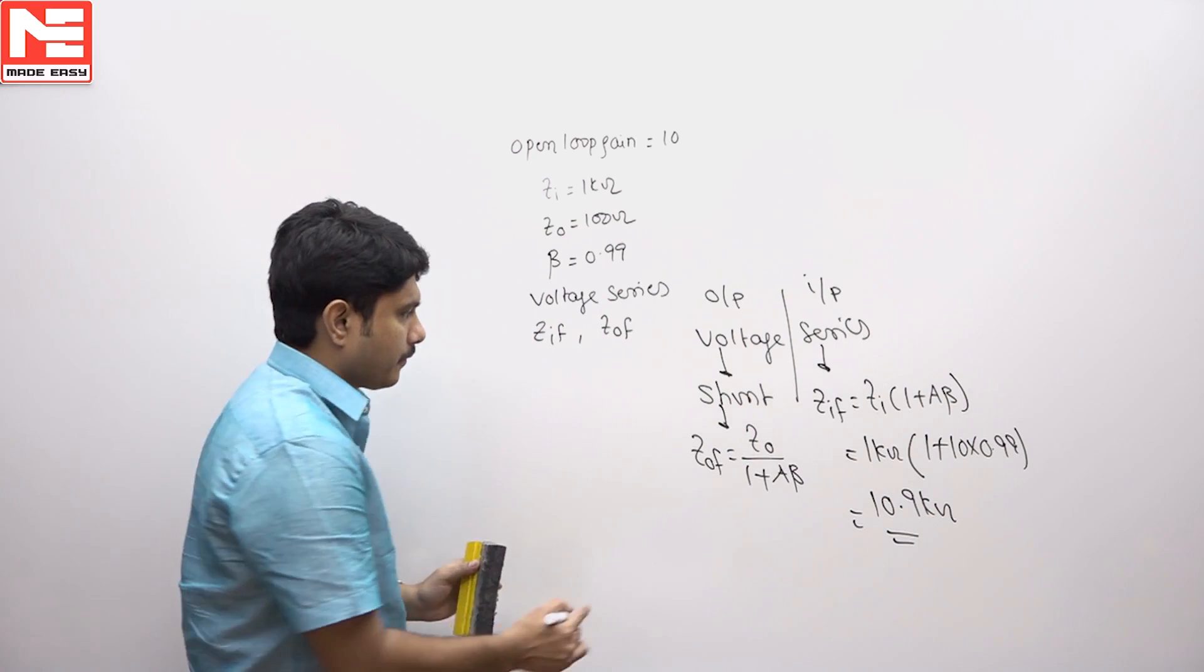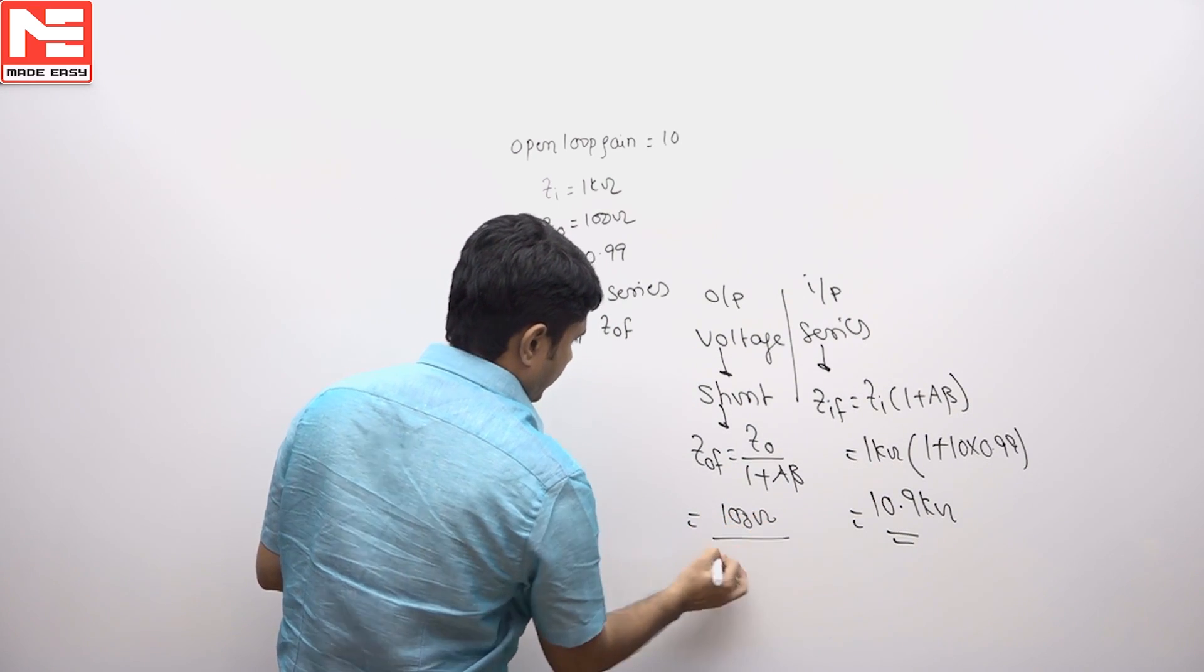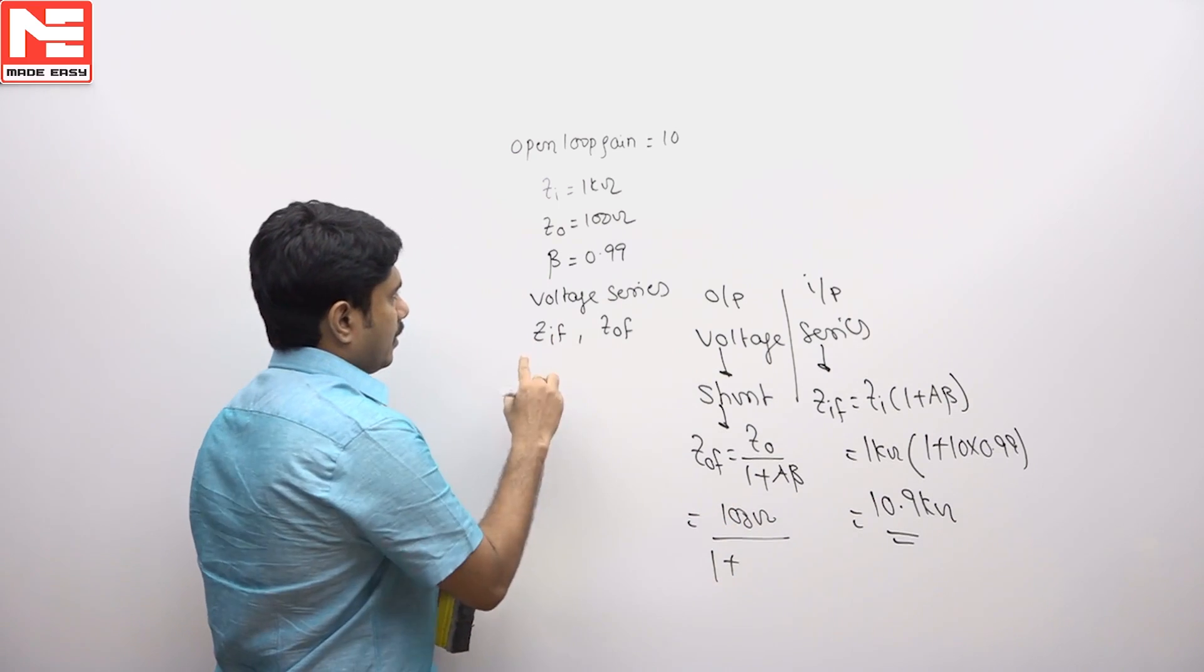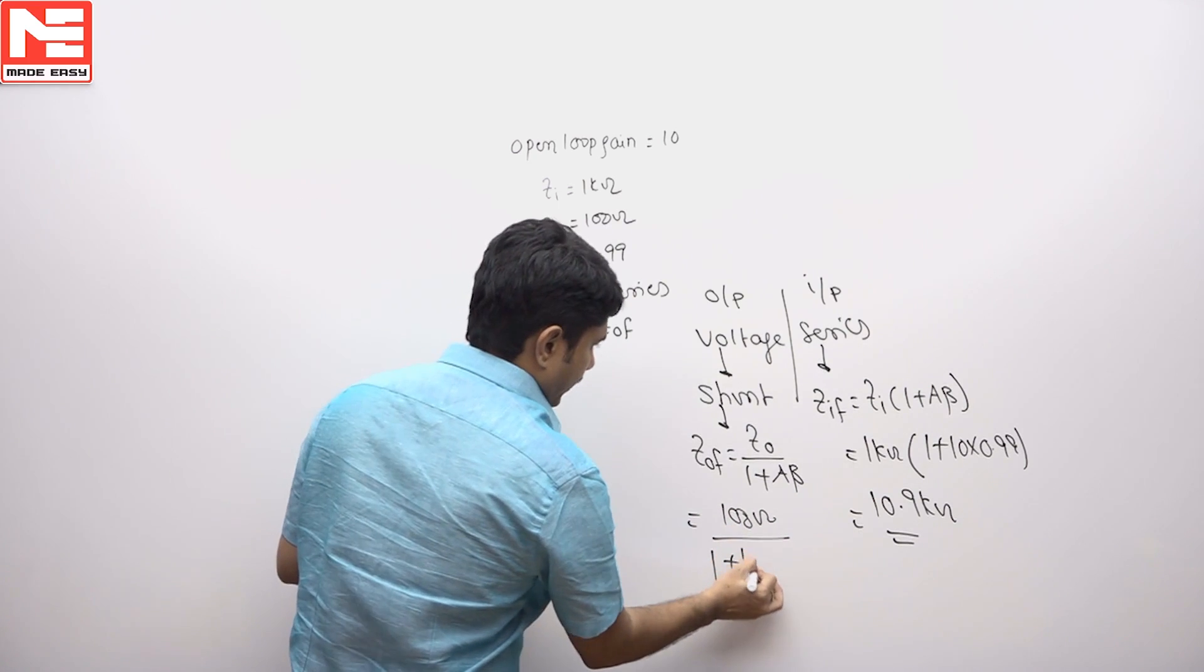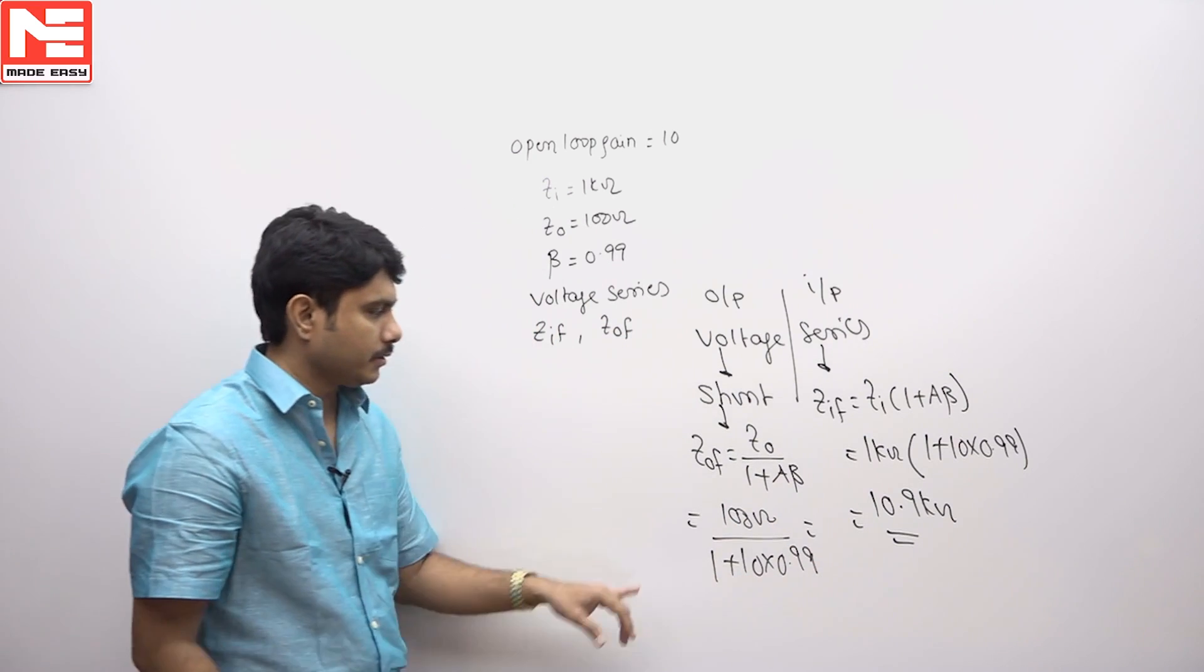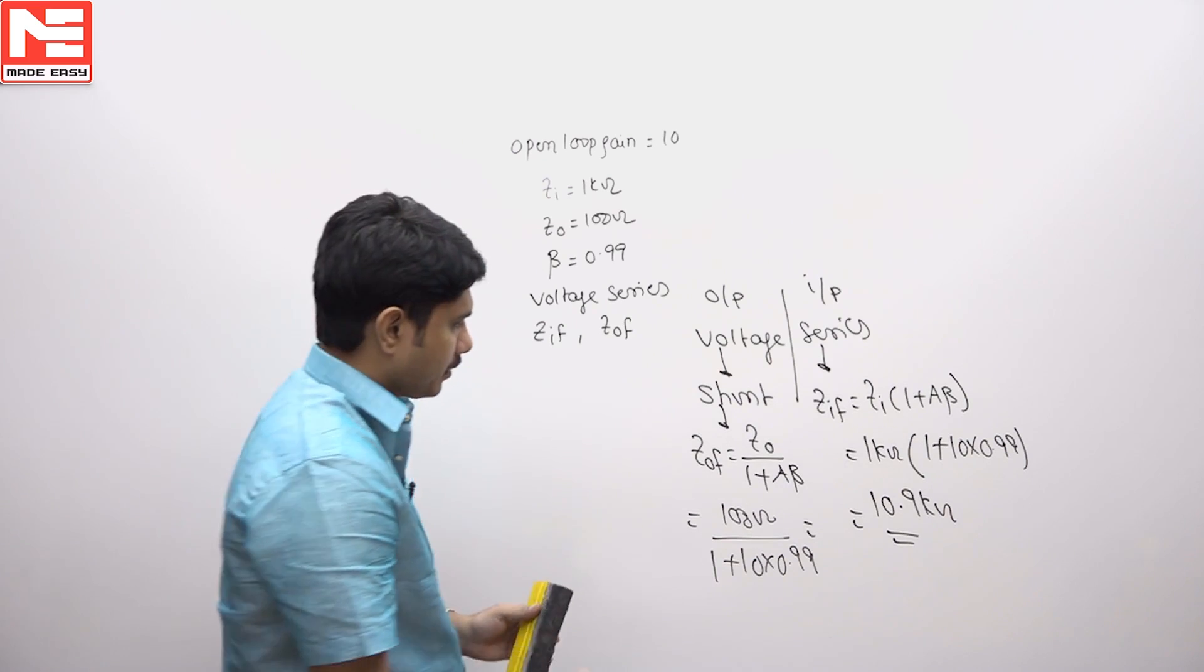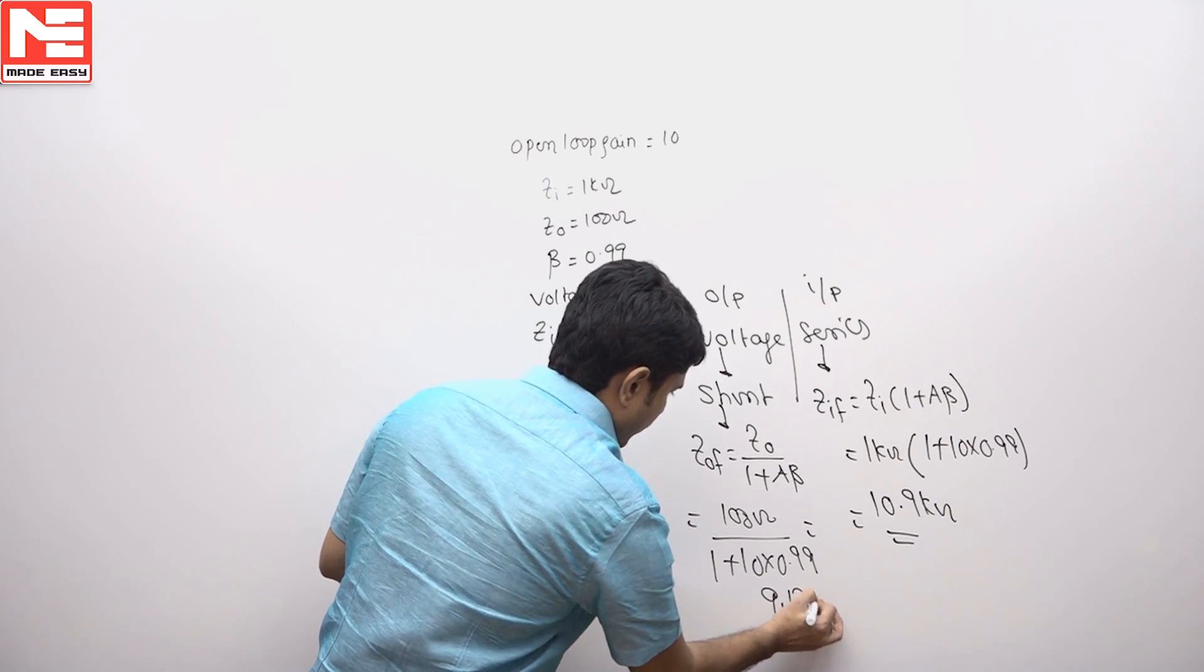What is Z0F? Z0F equals 100 ohms divided by (1 plus A times beta), which is 100 divided by (1 plus 10 times 0.99). Calculating this answer,